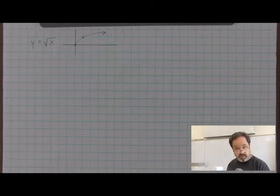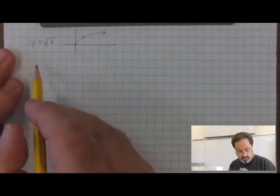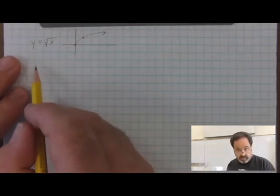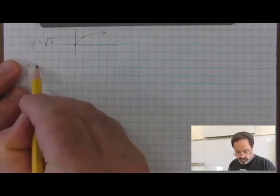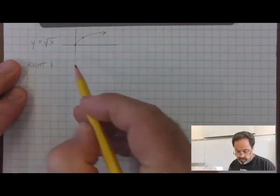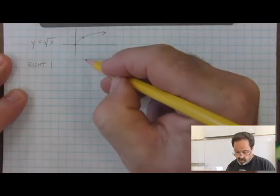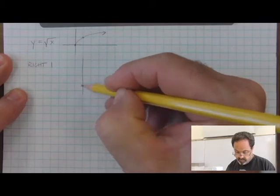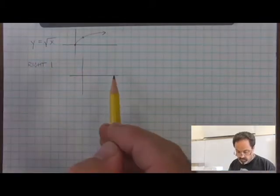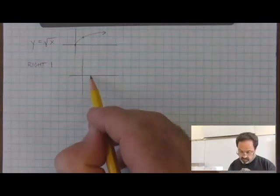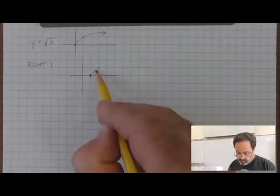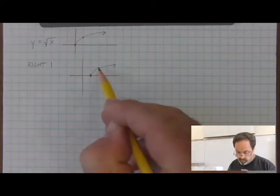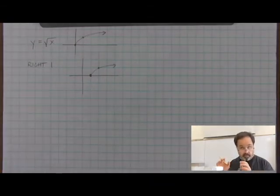We can reflect and we can rotate, but we're going to leave reflections and rotations for another time. If I wanted to do one of the most simplest things — move a graph to the right, specifically right by one — then the graph is going to be the same shape, the same square root curve, but it's going to start one to the right.